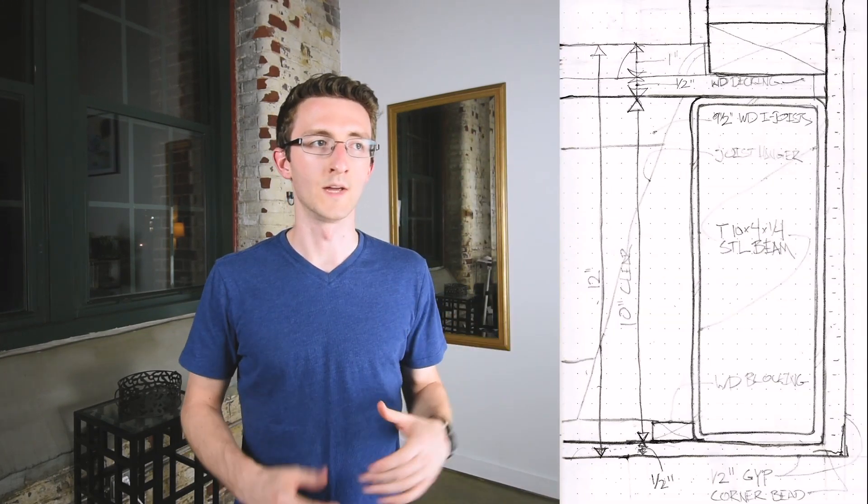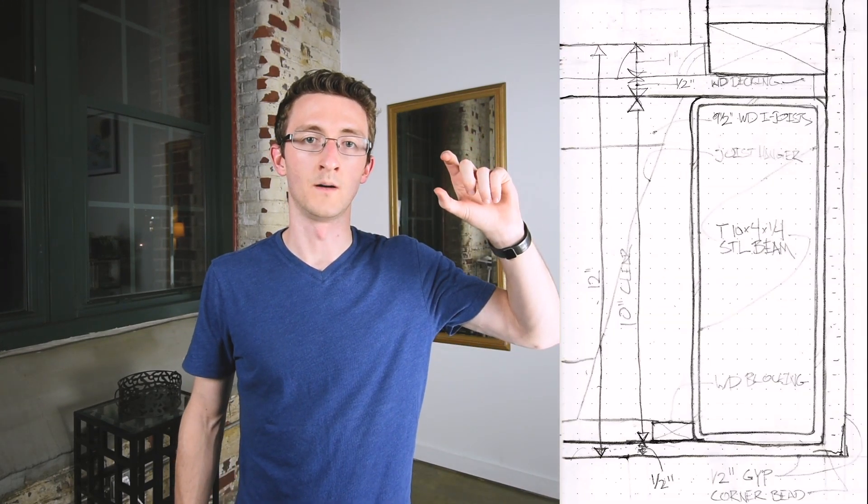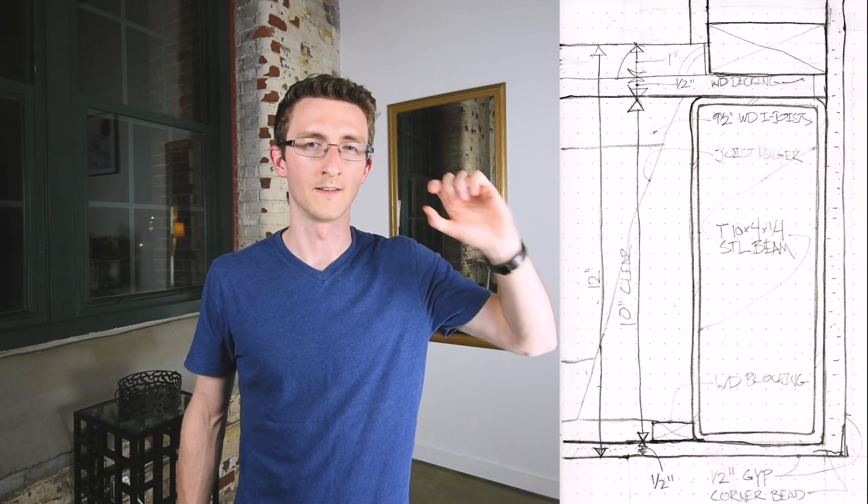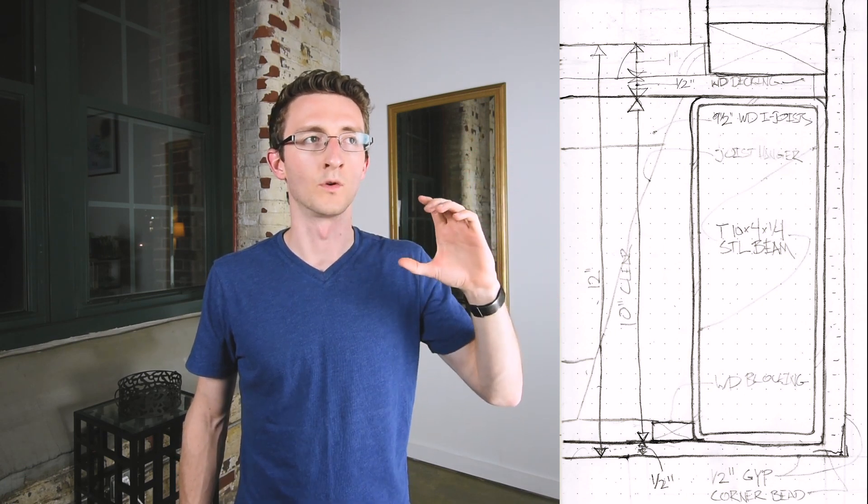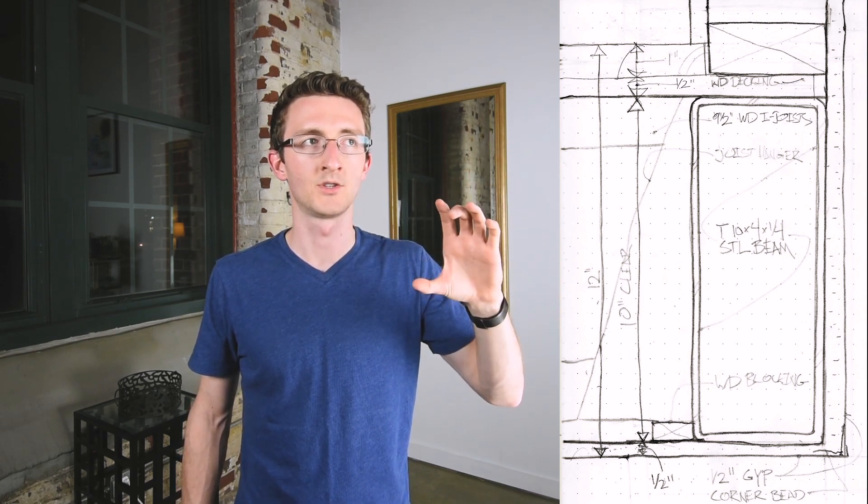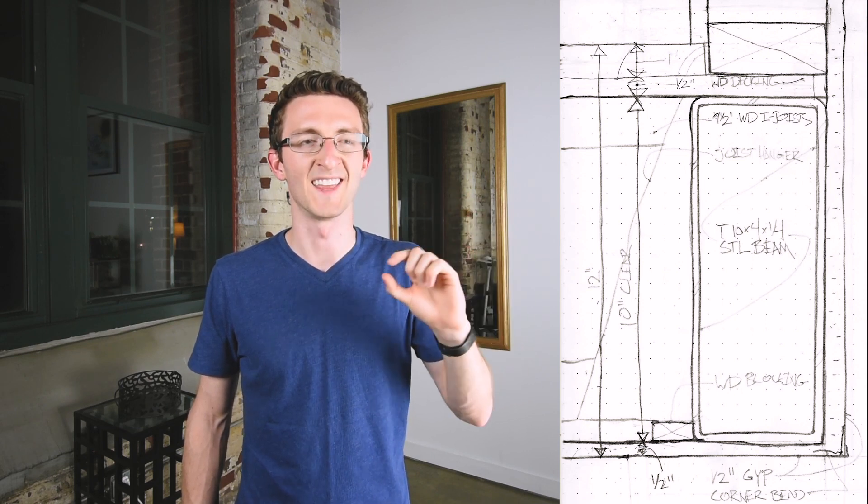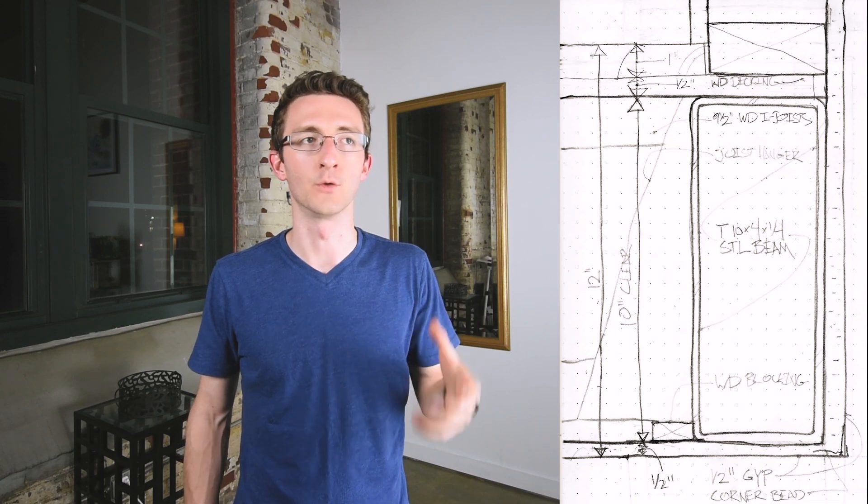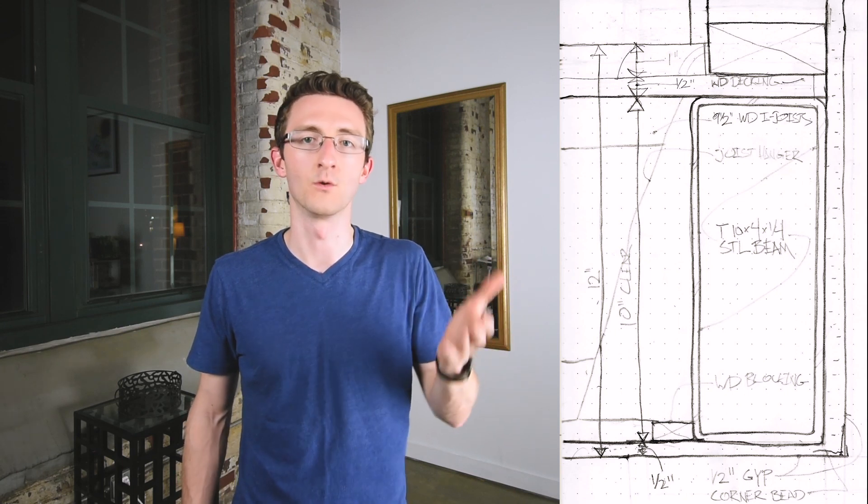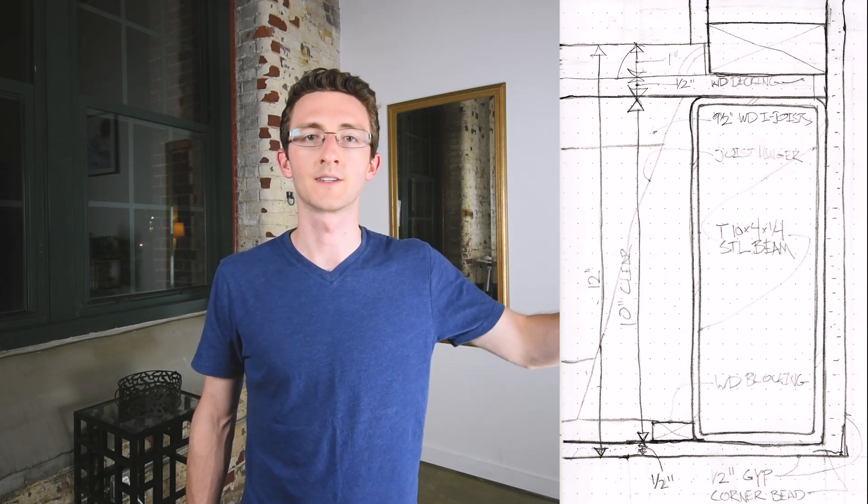So for example, if you have a floor—we're dealing with this right now—we have a floor that's 12 inches deep, and we have an inch and a half on the top of flooring. We have decking and then flooring, and then we're using 10 inch deep steel structure, and then a half inch gypsum board on the bottom.